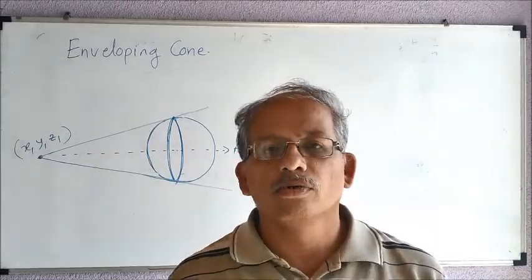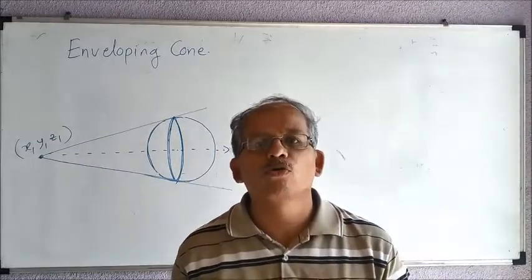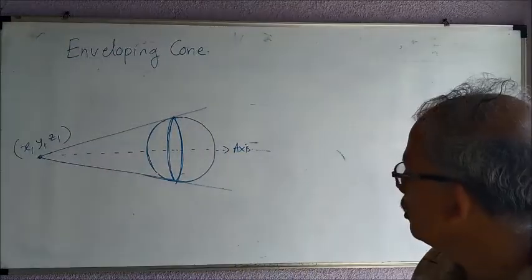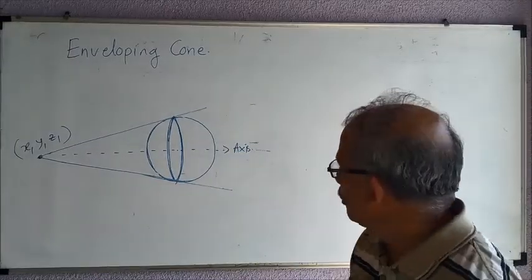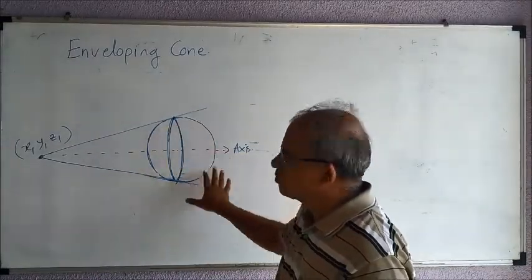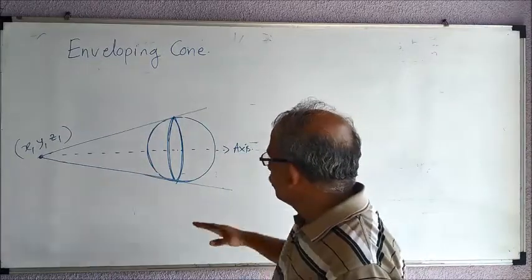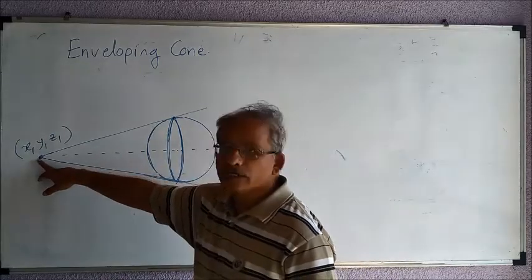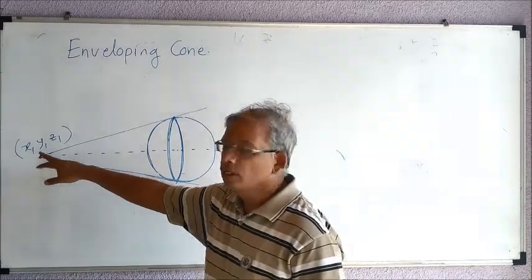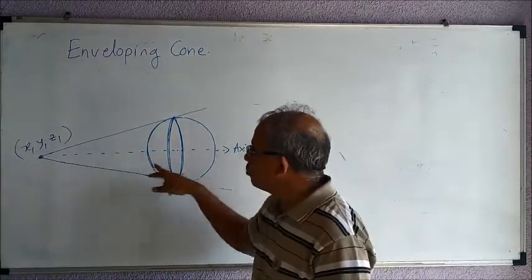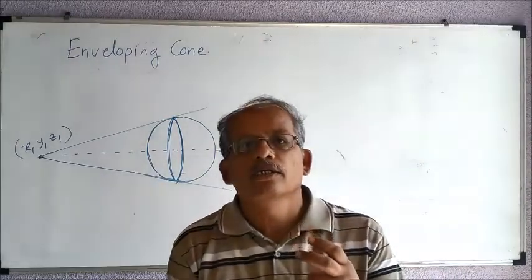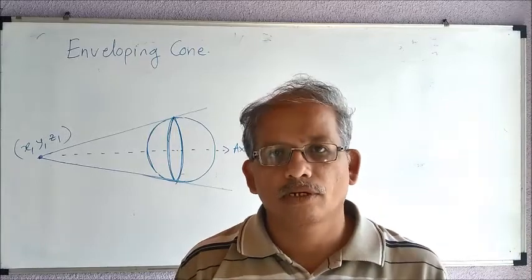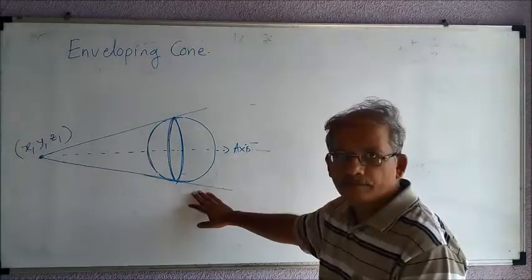Hello friends. Now let us see the concept of enveloping cone. The enveloping cone is made up of a sphere. The tangents to this sphere are converging and meeting at a point (x1, y1, z1). This way we are forming a cone which actually envelops a sphere, as shown.